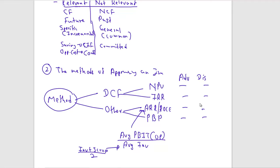Advantages of IRR: it also considers time value of money, cash flows, and the whole life of the project. Disadvantages: IRR is a relative measure (whereas NPV is an absolute measure) — you must compare IRR against a rate to decide, you cannot decide from the IRR figure alone. Explaining present values to managers is also difficult.